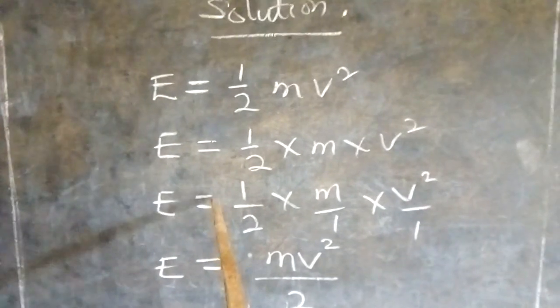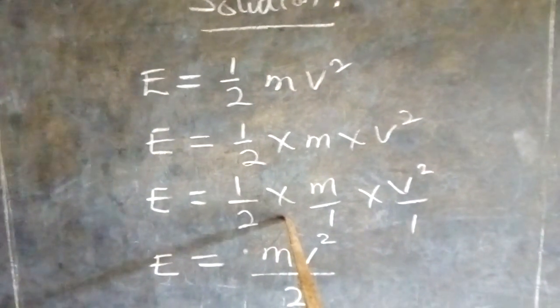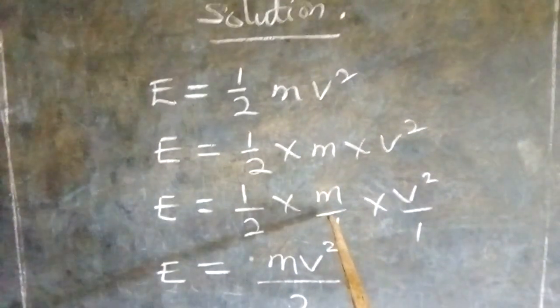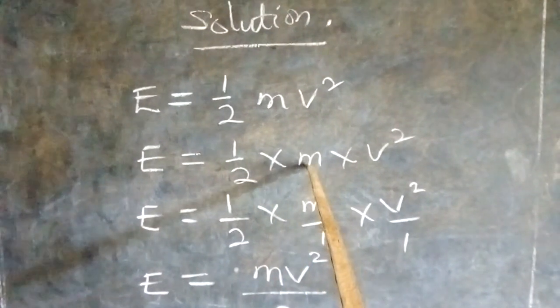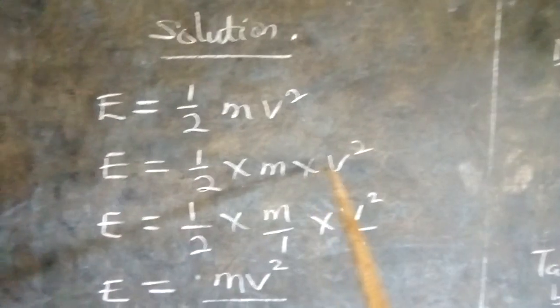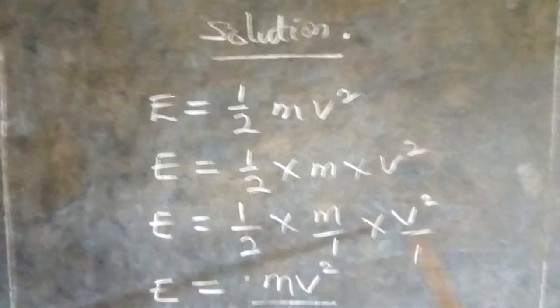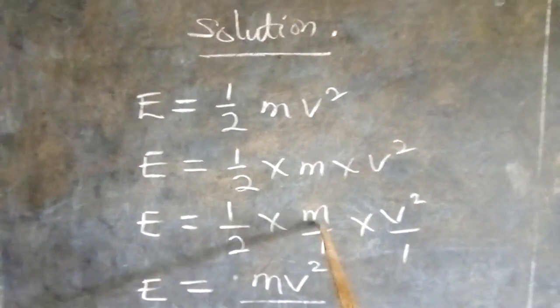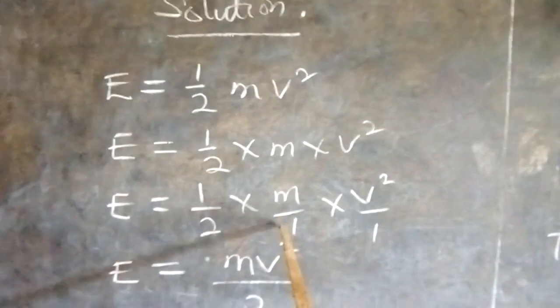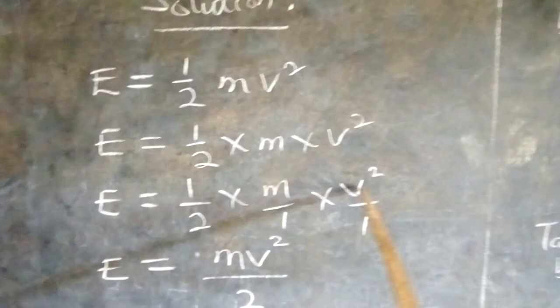E is equal to half times m over 1 times v squared over 1. What did we do here? Look at the way it is here. So, this is like a whole number and we are having a fraction here. So, we want to make them look alike. Putting one under it does not change anything. It only makes it look like a fraction. We have m over 1, then v squared over 1.